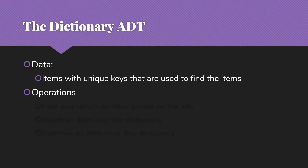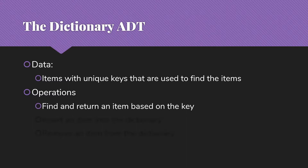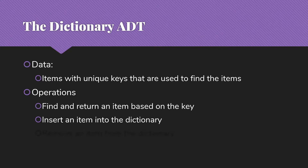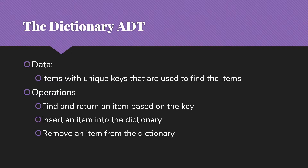There are three major operations for a dictionary. First, we want to be able to find and return an item based on the key. Of course, in order to have things to find, we have to be able to insert items into the dictionary. And then we often want to be able to remove items from the dictionary — there are exceptions, cases where we never take anything back out, but in many cases we do want this capability.